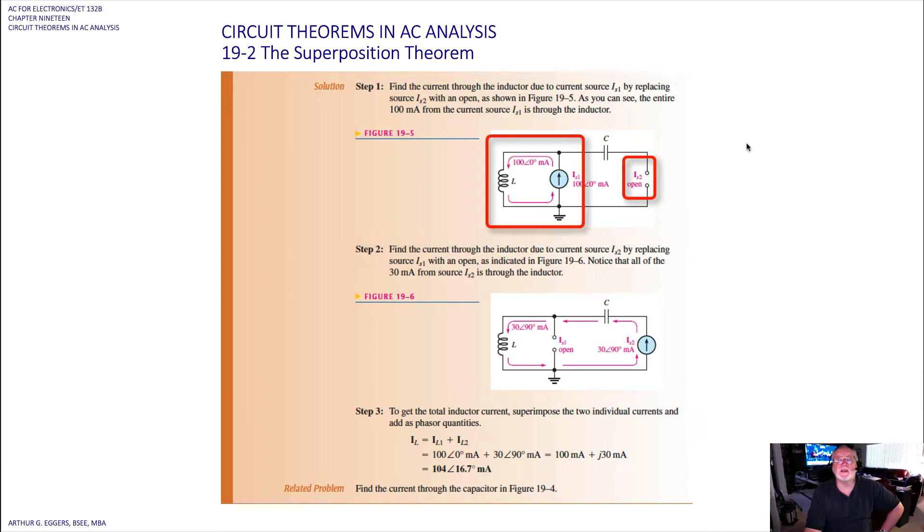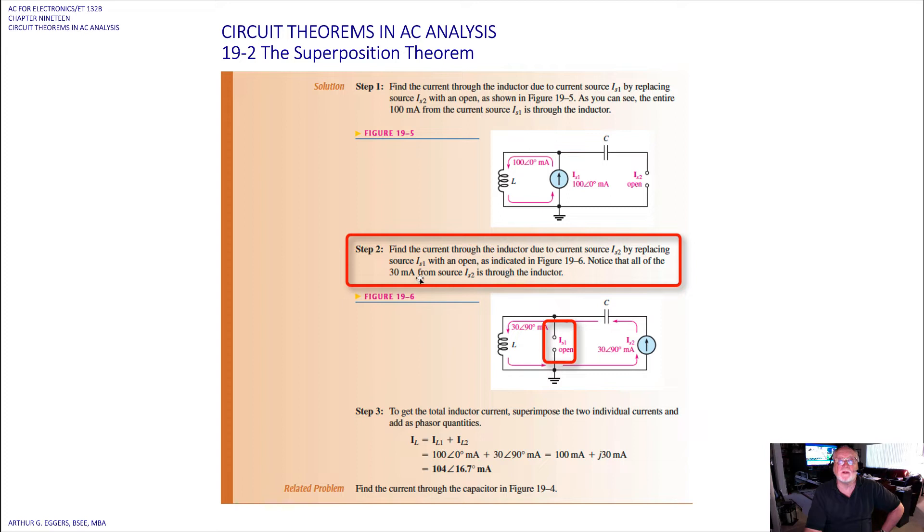As you can see, the entire 100 milliamp from the current source I1 goes through the inductor, nothing through the capacitor. Find the current through the inductor due to the current source two now by replacing the current source one with an open as indicated in the drawing. Notice that all of the 30 milliamp of current goes through the source through the inductor.